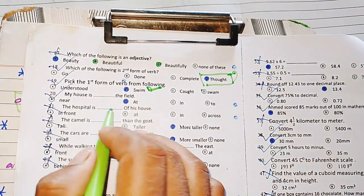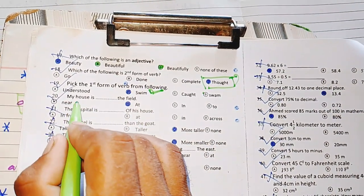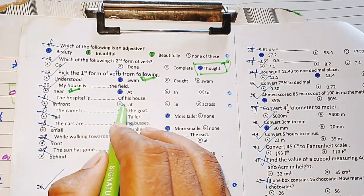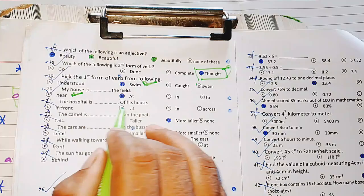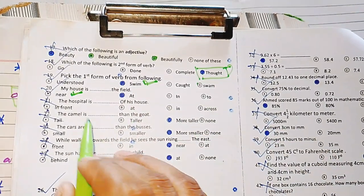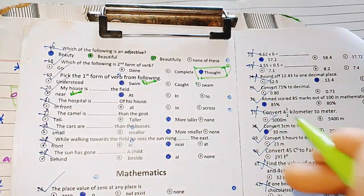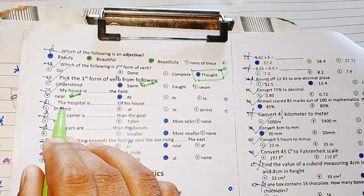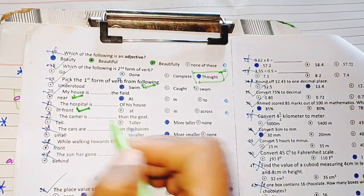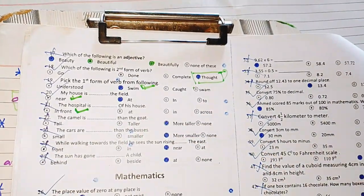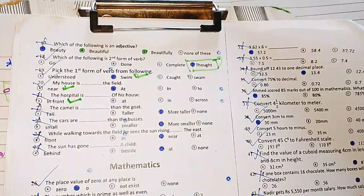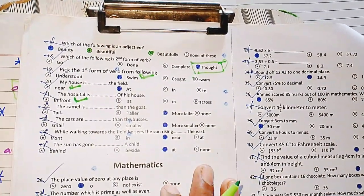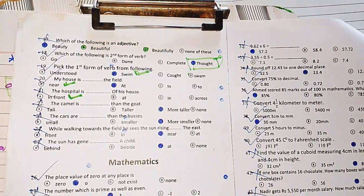My house is near the field. The hospital is in front of my house.